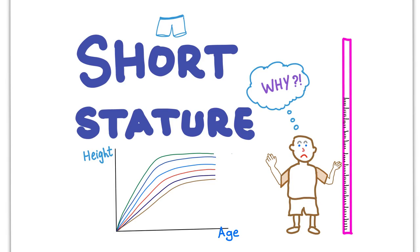In a previous video we talked about growth charts and percentile curves. Now let's get more details and look at the abnormalities. This video will be talking about short stature — when a kid is shorter than the average or mean population.